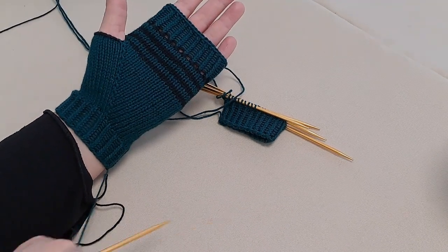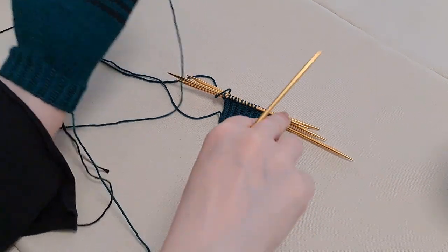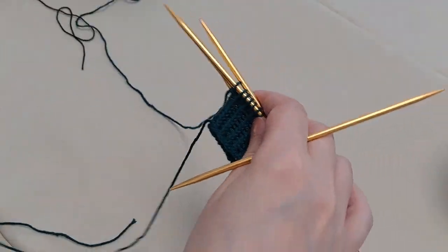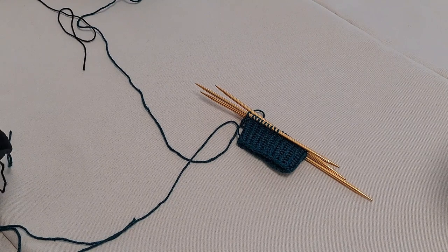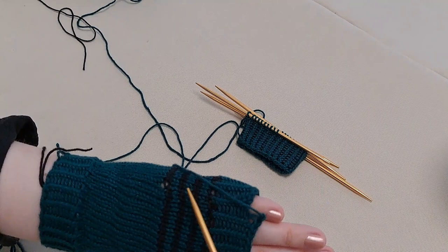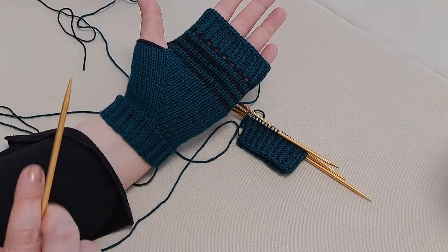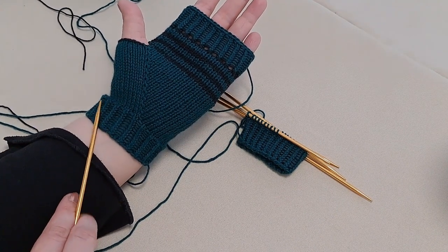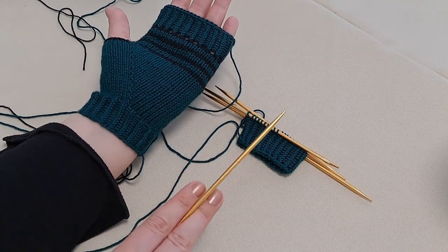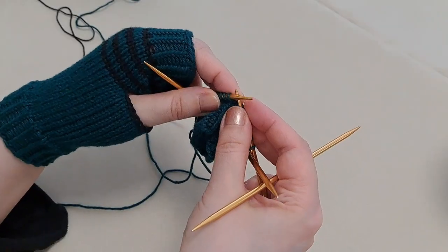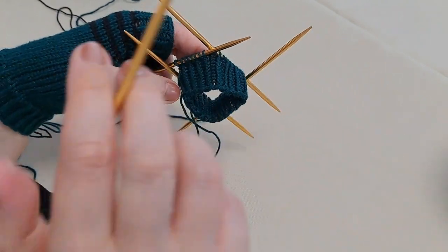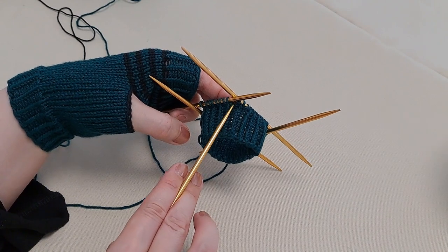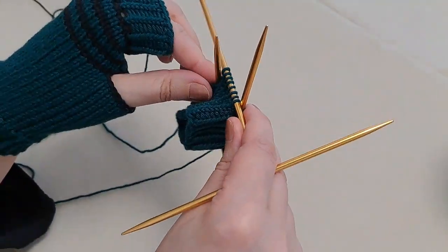I have already worked the ribbing and now it's time to do the thumb gusset. In my first glove I have the change of rounds here and I would like it to be in the same place in the second glove as well just so I can get the change of stripes to the same place. Which means here in the first glove I worked my thumb onto needle number two and on the second glove I'm going to work it on needle number three. Move two stitches onto needle number three and my increases are going to be worked here right at the beginning of needle number four.